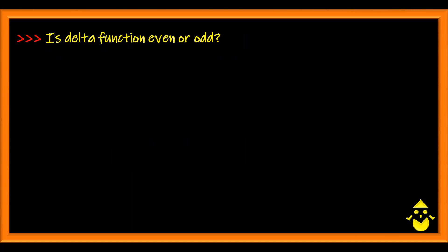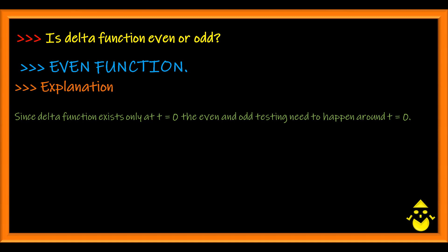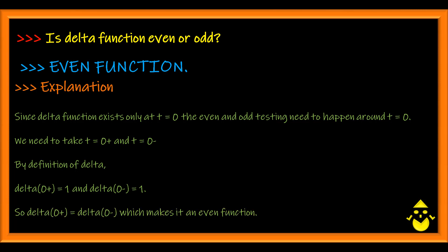Is delta function even or odd? Even function. Why? The function exists only at t is equal to 0, so the even or odd testing would have to happen at t equal to 0 plus and t equal to 0 minus. By definition of delta, delta of 0 plus and delta of 0 minus are the same, which makes it an even function.